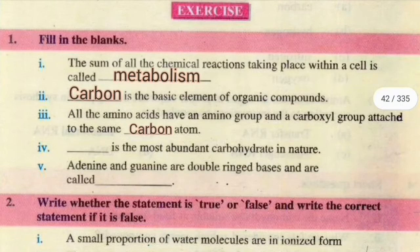Number 4, cellulose is the most abundant carbohydrate in nature. Number 5, adenine and guanine are double ring bases and are called purines. Adenine aur guanine ko collectively purines kehte hain.